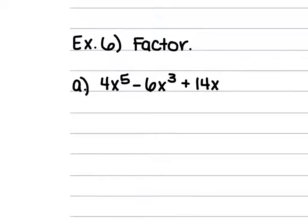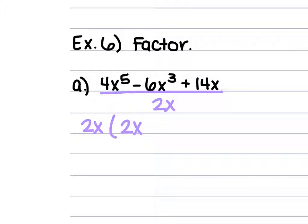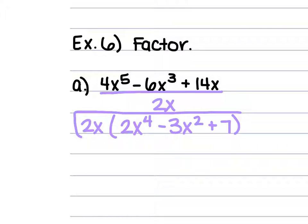For Example 6a, we have 4x⁵ minus 6x³ plus 14x. The greatest common factor is 2x, which comes out front. 4x⁵ divided by 2x is 2x⁴, negative 6x³ divided by 2x is negative 3x², and 14x divided by 2x is 7. So we have 2x times (2x⁴ minus 3x² plus 7).